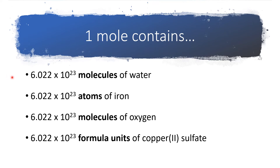For instance, one mole of water, which is a molecular or covalent compound, is 6.02 times 10 to the 23rd molecules of water. If we're talking about an element like iron, one mole is 6.02 times 10 to the 23rd atoms of iron.